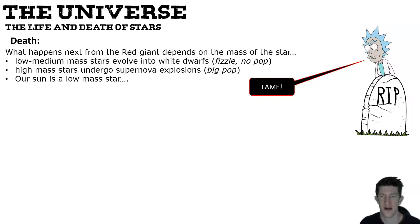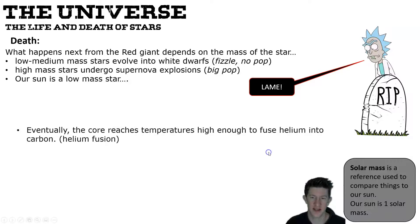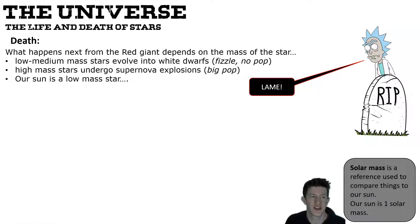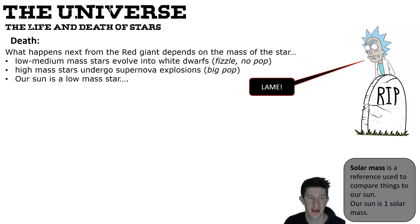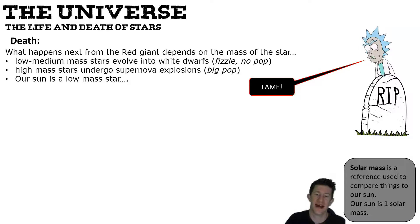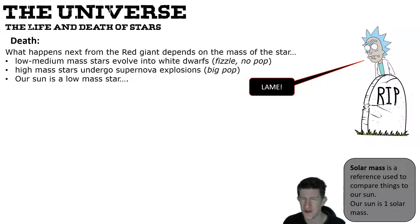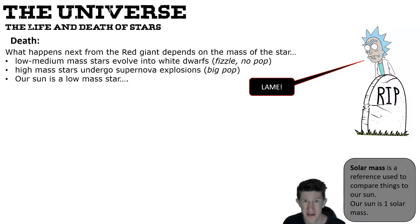When we say 'solar mass', it refers to how many times bigger than our sun a star is — one solar mass is the size of our sun, which is one million times larger than Earth. You'll see references to six, eight, and ten solar mass stars. A ten solar mass star is ten times larger than our sun — that is ten million Earths — a truly massive star.